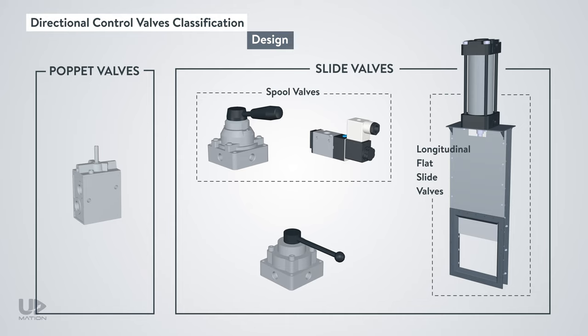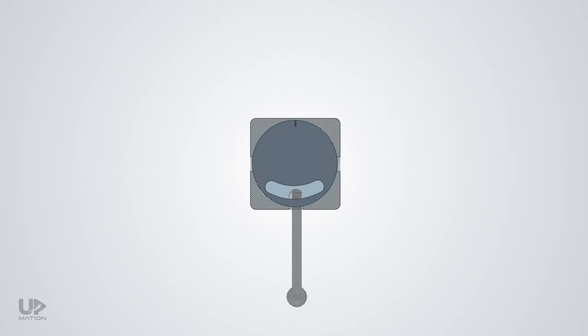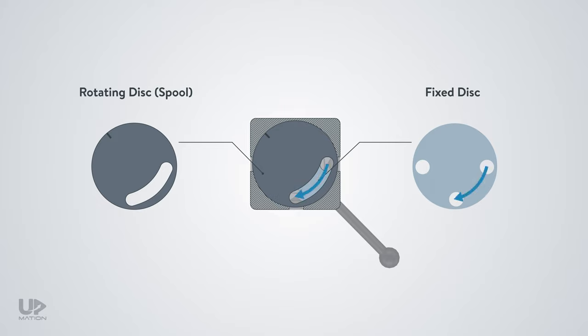The third type of slide valve is the plate slide valve, or better said, rotary plate valve. If we look at it from topside, we see this type of design also employs a rotational mechanism in that one rotating disc rotates against a fixed one. And in this way, the ports or channels will get connected with one another.